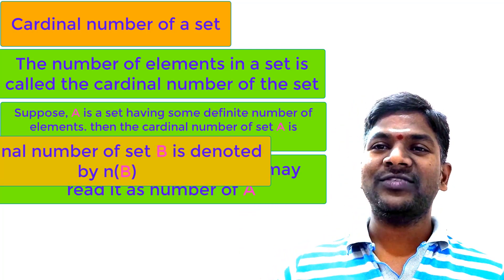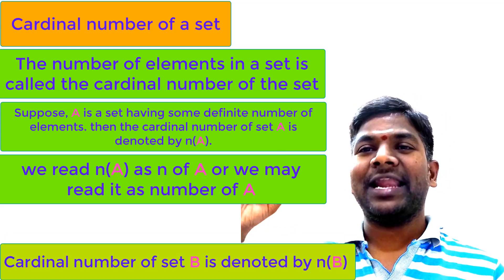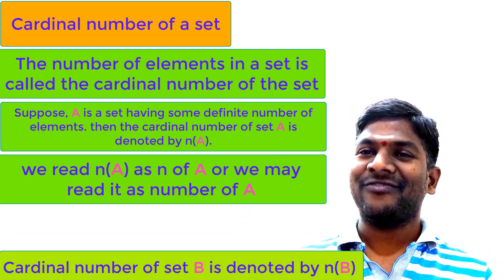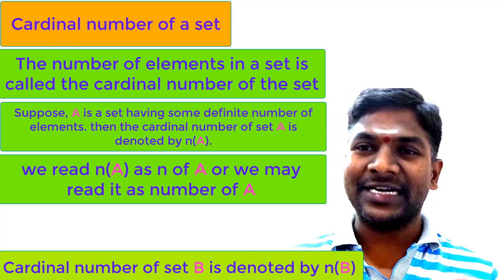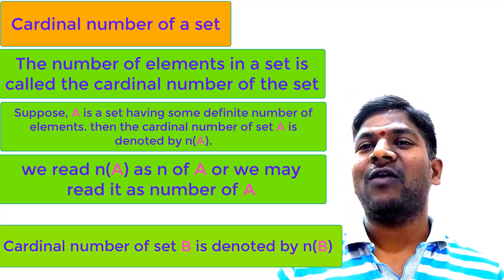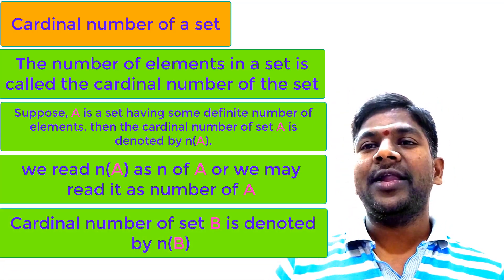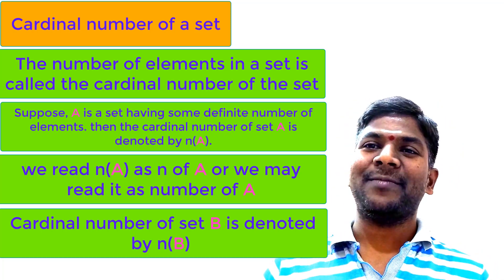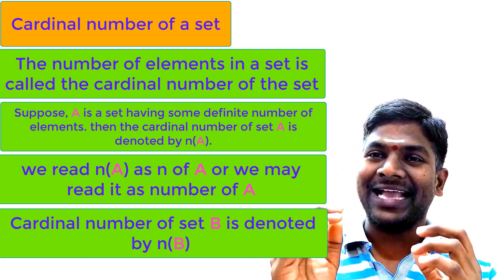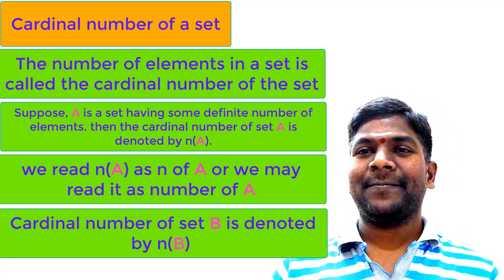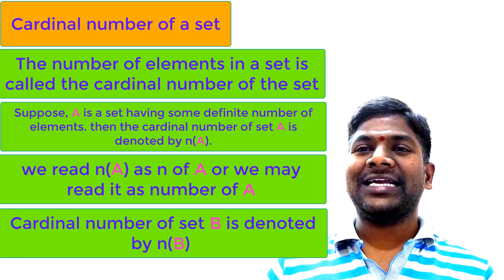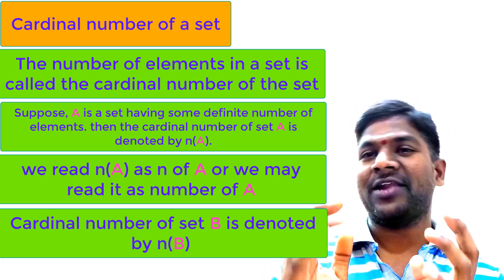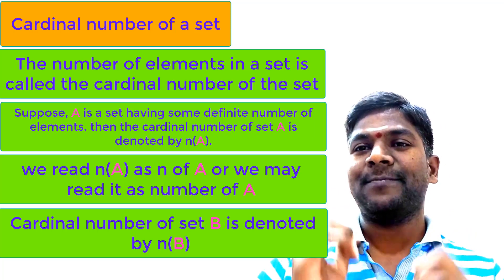Similarly, the cardinal number of set B is denoted by N of B. N of B means the number of elements in set B — that is what the cardinal number is. Now let us understand the cardinal number of a set by an example. We can get clarity after observing the example.